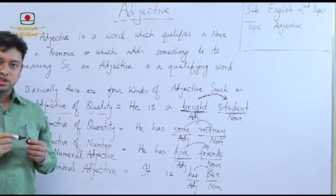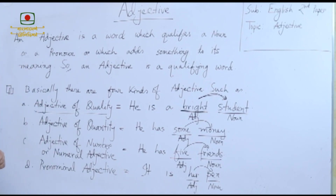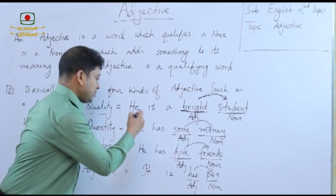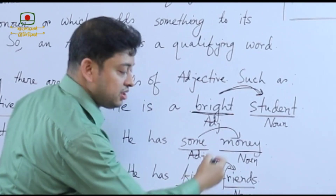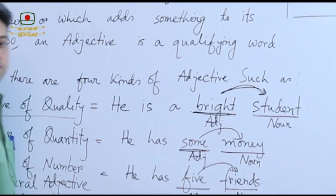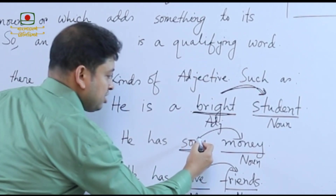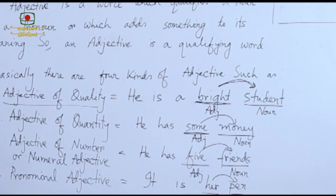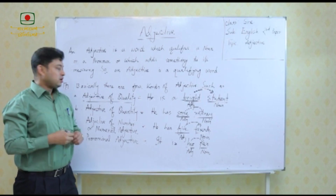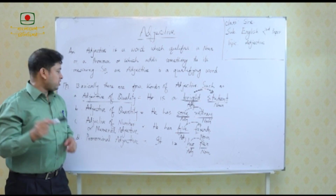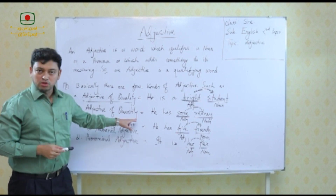This is the first classification, and number two is adjective of quantity. For example: He has some money. Here the word 'some' is an adjective because it is qualifying the word 'money'. Money is a noun. So we are talking about the quantity of the noun, that is why this is adjective of quantity.